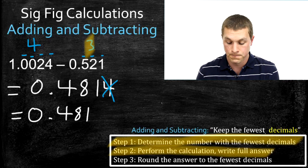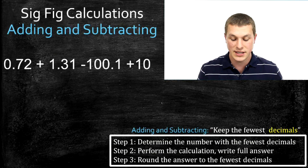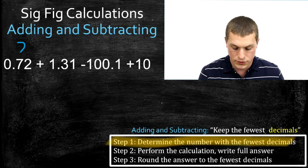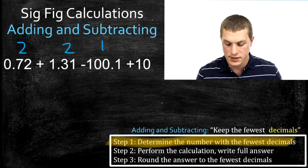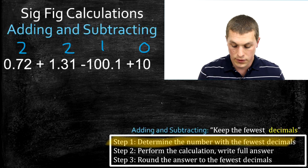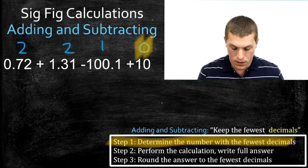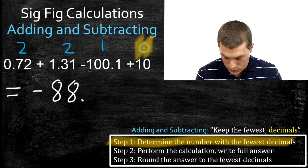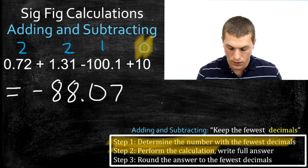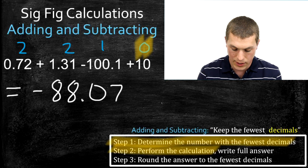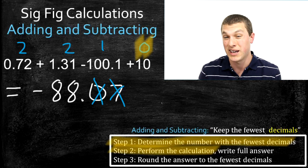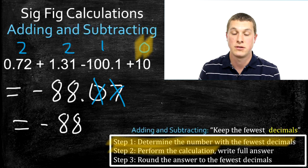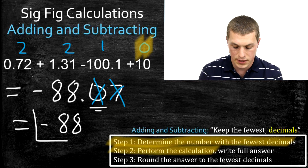One last addition and subtraction example with multiple terms. Step one: count decimal places — two numbers have two decimal places, one has one, and 10 has zero. So 10 dictates the answer should have zero numbers past the decimal point. Step two: plugging everything into the calculator gives −88.07. Step three: we keep zero decimal places; since the digit after the 8 is 0, we don't round up, giving the final answer of −88.